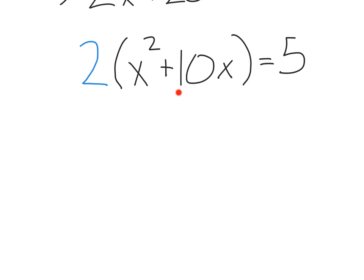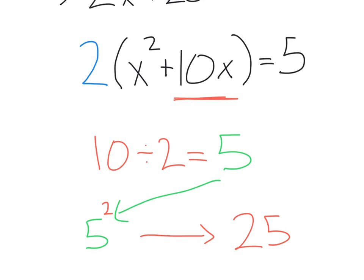From there, we proceed like normal. 10 is our b term, so we're going to take that 10, divide it by 2, that'll give us 5. Then we square that 5. 5 times 5 is 25.